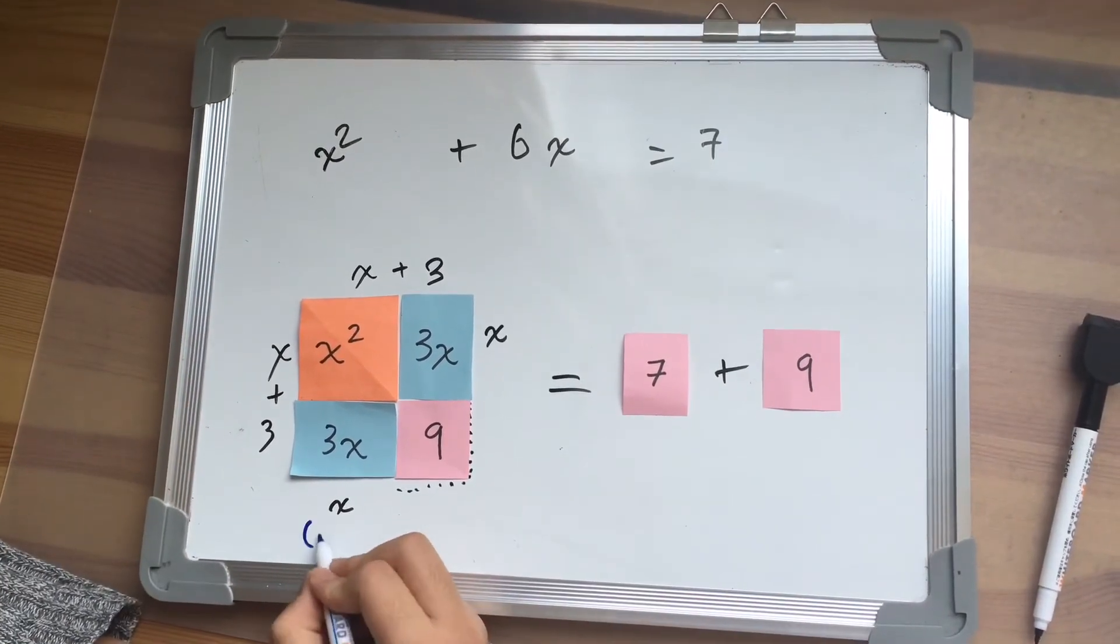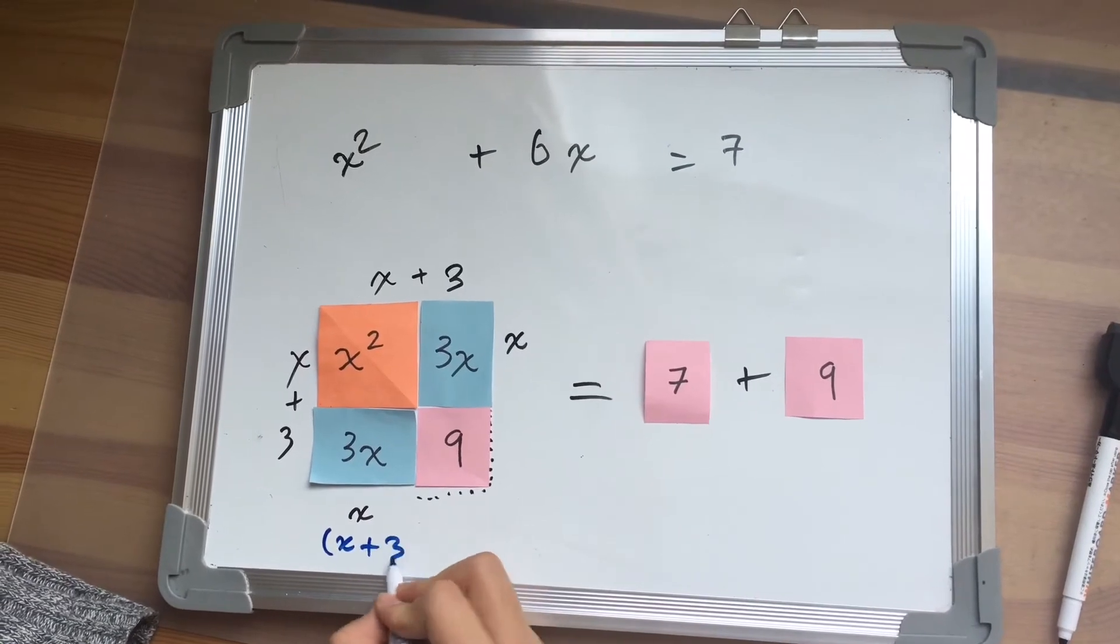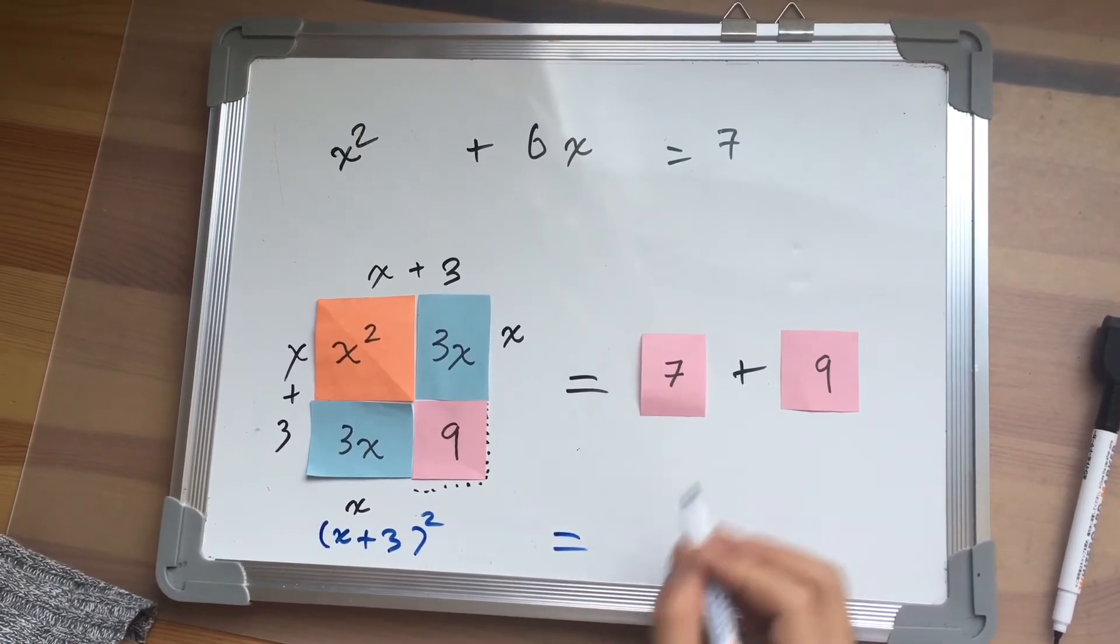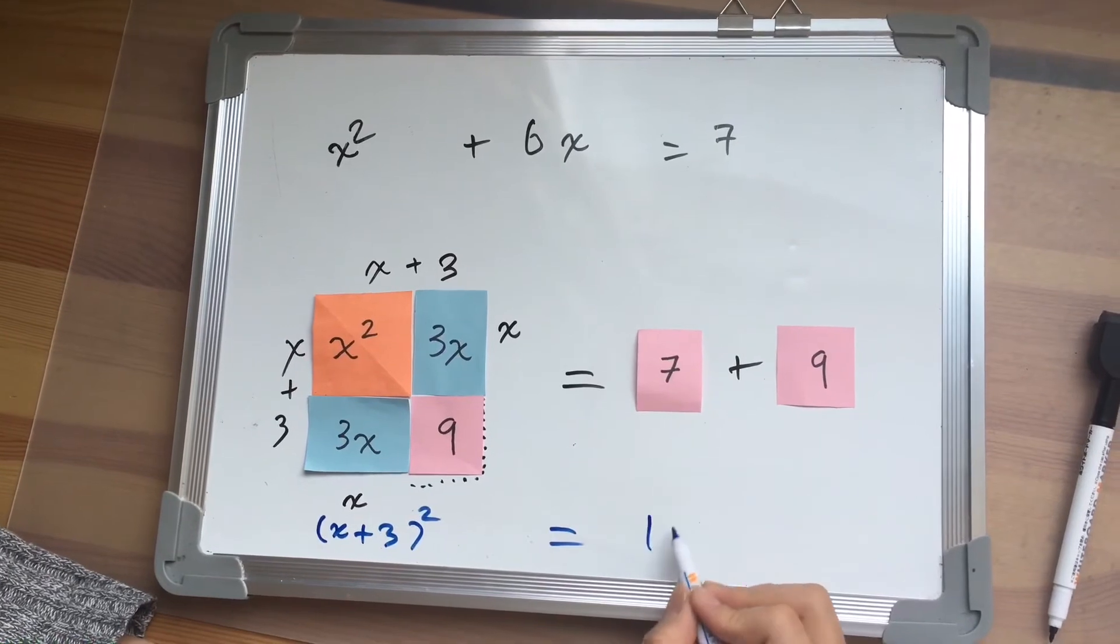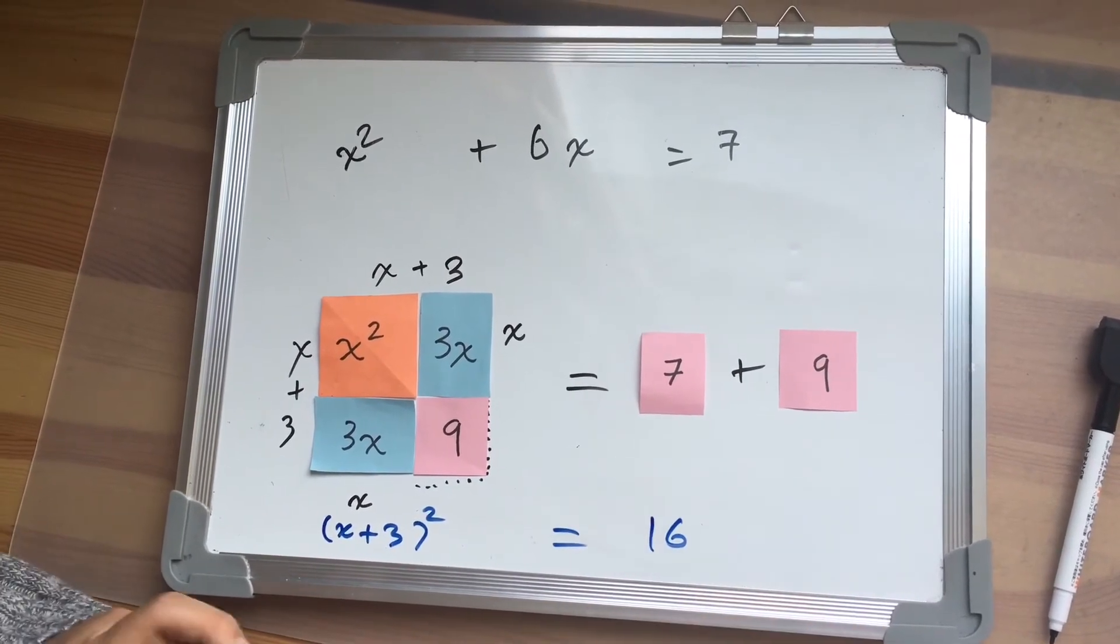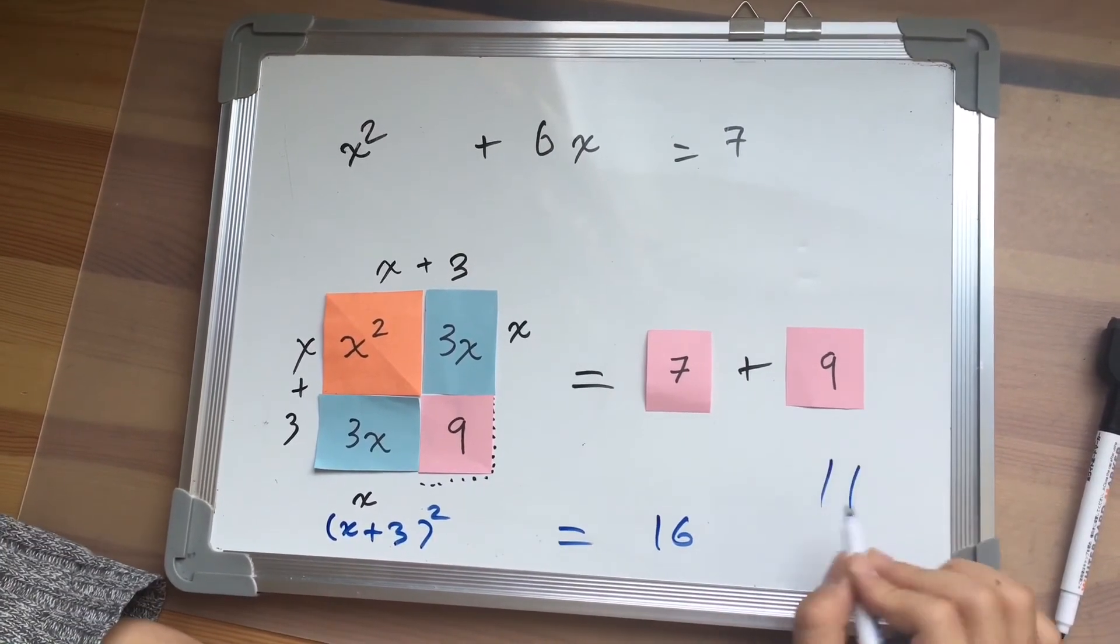It will be x plus 3, the whole square, equals 7 plus 9, which is 16. That's it. Bye-bye.